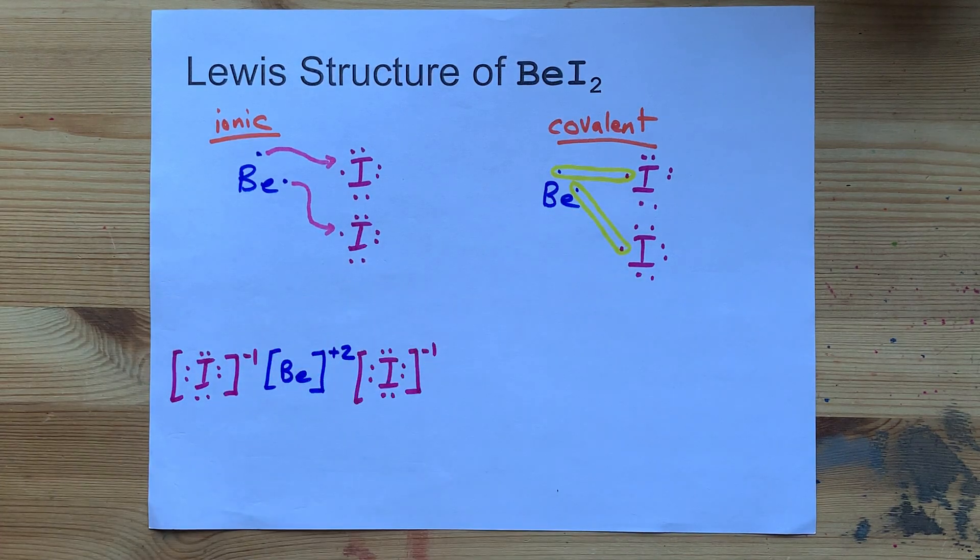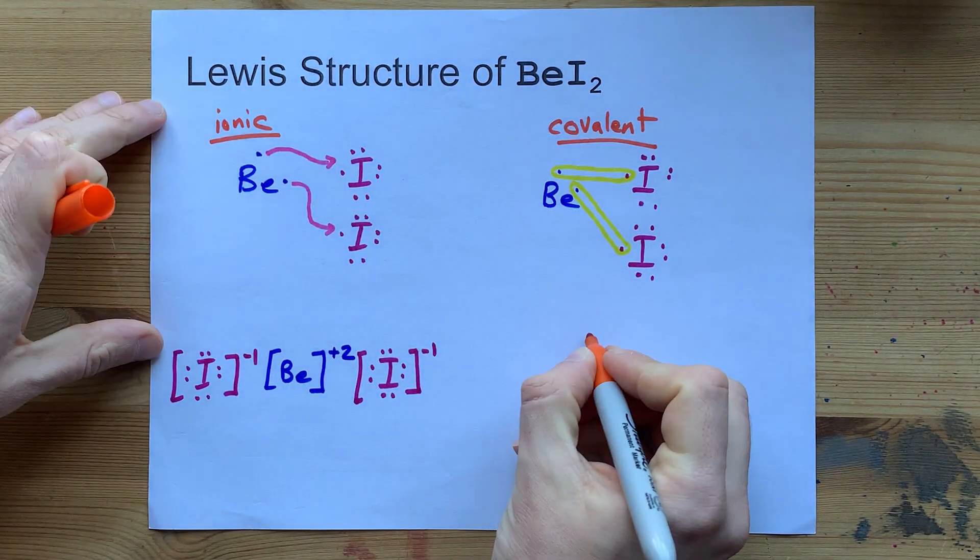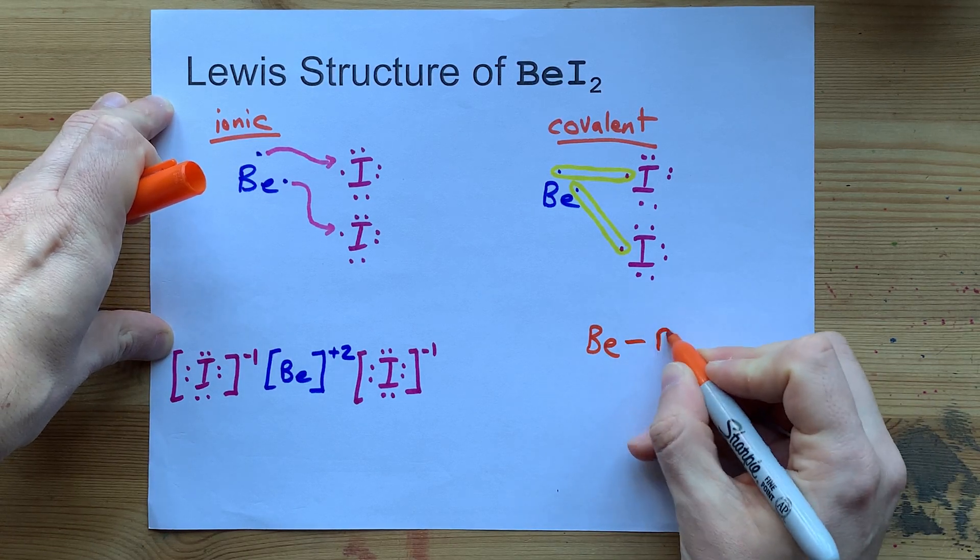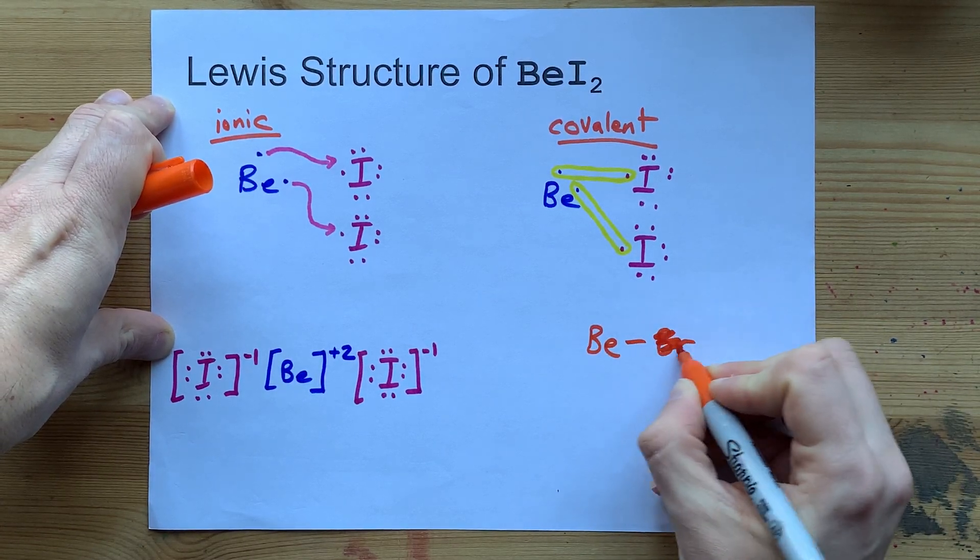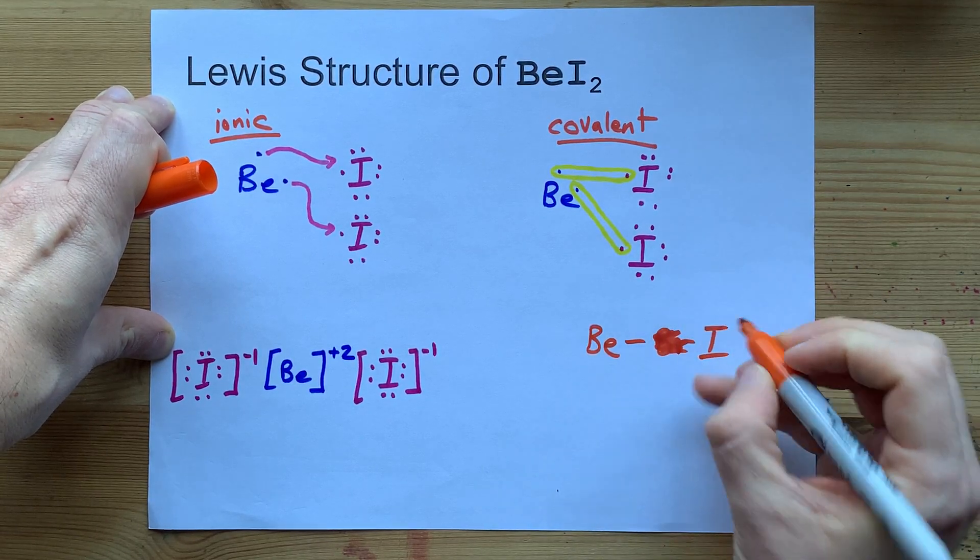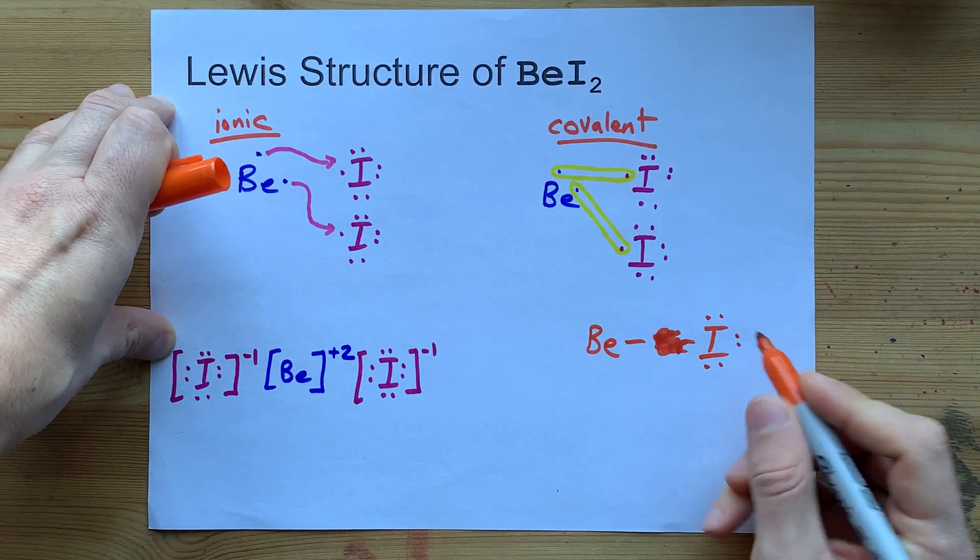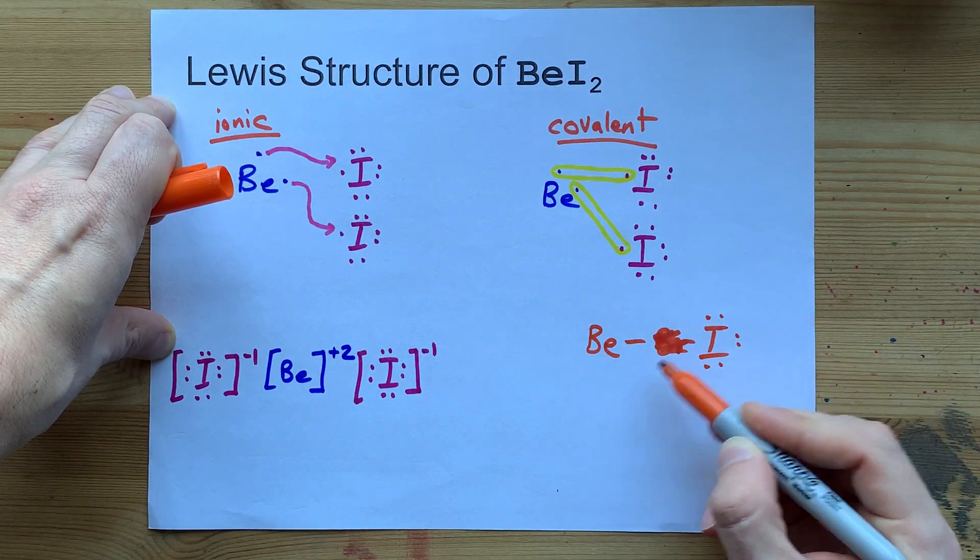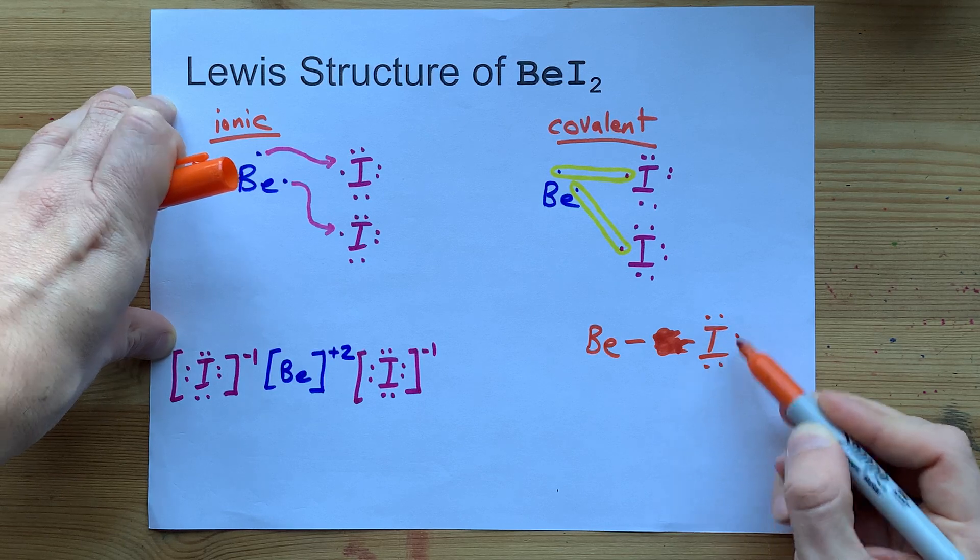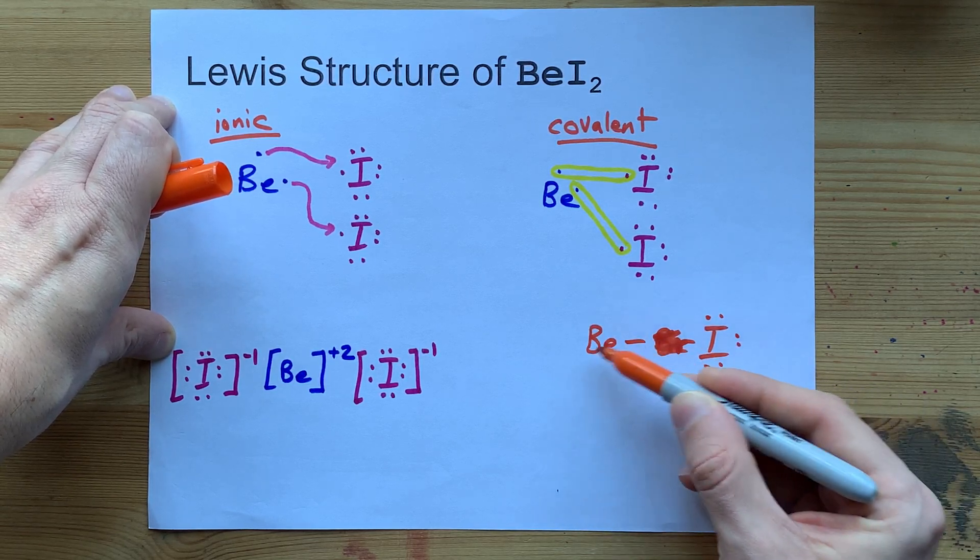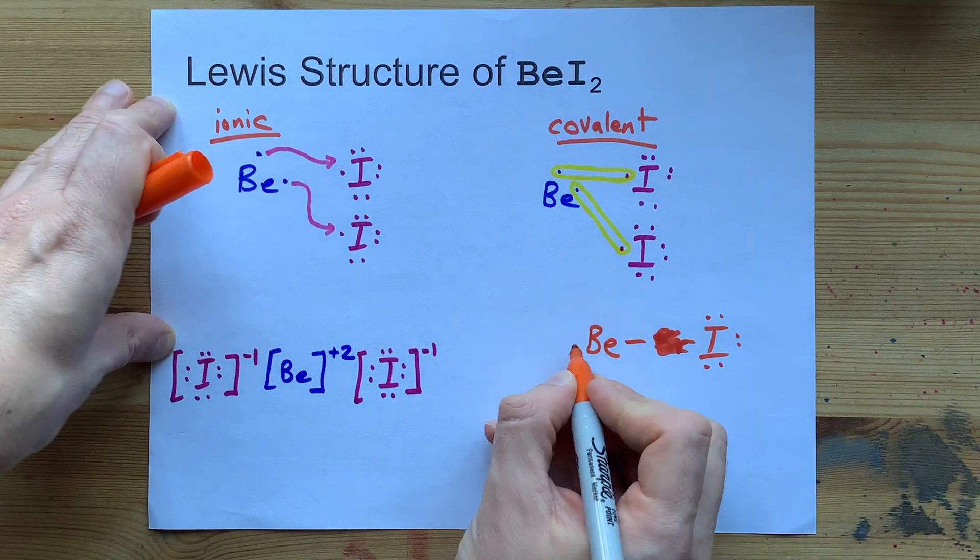So the final structure here is that beryllium is covalently bonded to a bromine, oh, not a bromine, it's an iodine atom on the right-hand side. Each of those iodines still has three lone pairs of electrons. You can now see that that iodine has 8 electrons around it. 1, 2, 3, 4, 5, 6 that definitely belong to it, and the 2 from the covalent bond between the beryllium and the iodine.